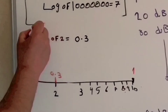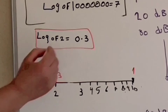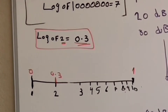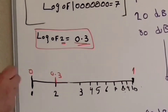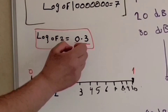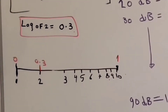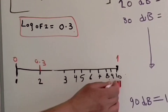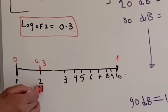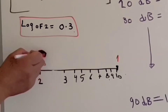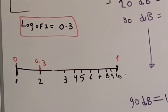There is one more log value we need to memorize, which is log of two. Log of two equals zero point three. To understand why it is zero point three, we have this map — you don't need to memorize it, it's not important for the SPI exam. This is a non-linear logarithm scale from number one all the way to number ten, and it's not even. The number two is one third away from number ten, which is why log of two equals zero point three.